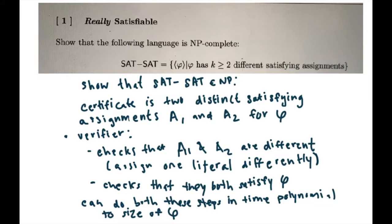Problem 1 asks us to show that the language SATSAT is NP-complete, where the input is a Boolean formula C that has at least two different satisfying assignments. First, we want to show SATSAT is in NP. Our certificate will be the two distinct satisfying assignments A1 and A2 for C. The verifier checks that A1 and A2 are different — meaning they assign at least one literal differently — and that they both satisfy C. We can do both of these steps in polynomial time, so it's a polytime verifier.